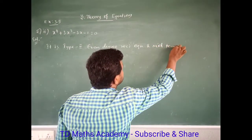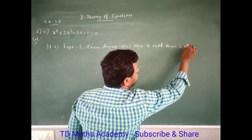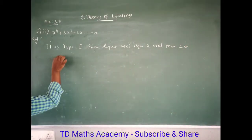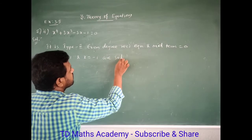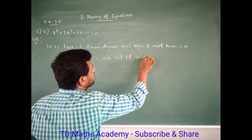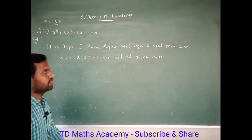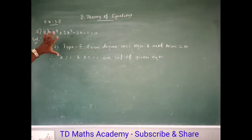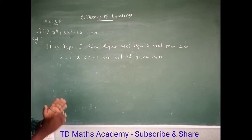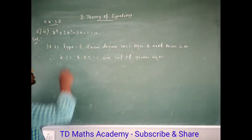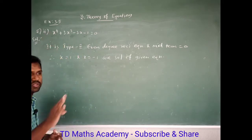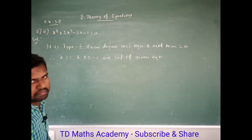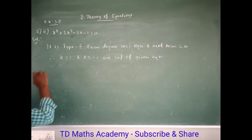Because the middle term is zero, we know x = 1 and x = -1 are roots. So our solution includes x = 1 and x = -1. Since this is a 4th degree equation, we need 4 solutions total — so there are 2 more solutions remaining to find.